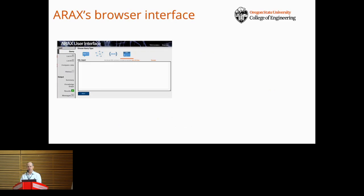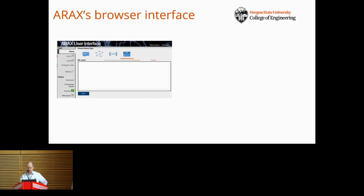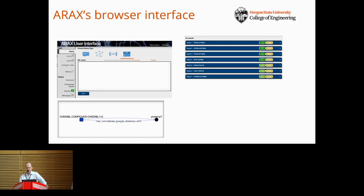In ARAX's browser interface, a user's query is input as a query graph, which in general can have nodes of fixed identity or wildcard nodes of a fixed bioentity type, like protein. Here's the query graph for a query that finds proteins that acetaminophen interacts with by consulting structured knowledge bases and overlaying literature semantic distance information. And here are the results ranked by confidence score.